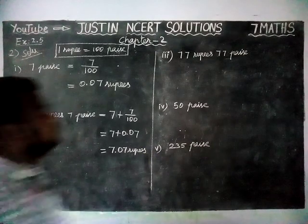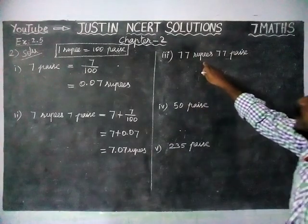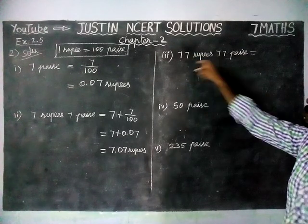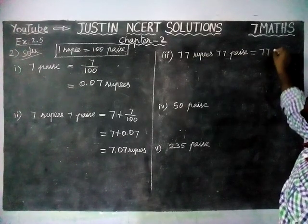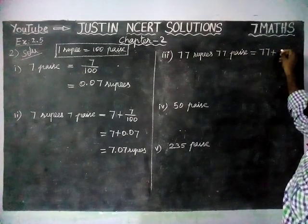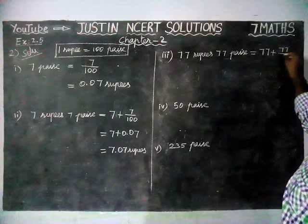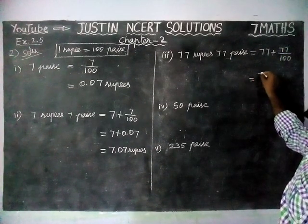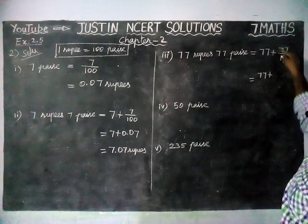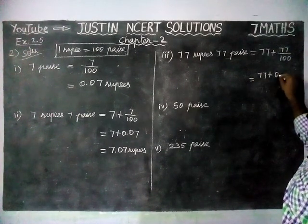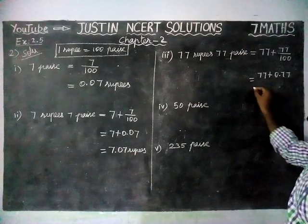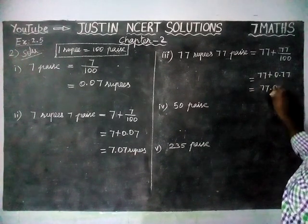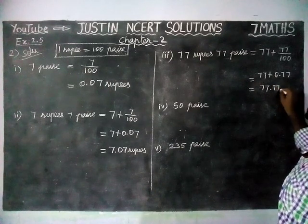Next, third question: 77 rupees 77 paise. 77 is already in rupees, so 77 plus 77 divided by 100. We are dividing by 100. So, 77 by 100 is equal to 0.77 rupees. Therefore, 77 plus 0.77 is equal to 77.77 rupees.